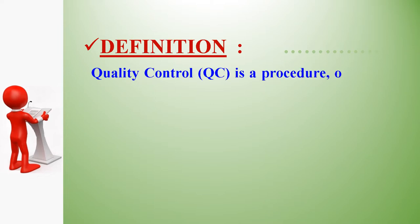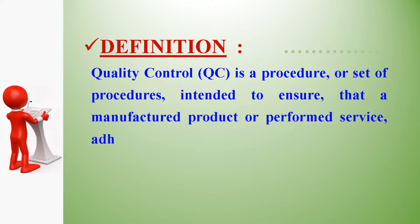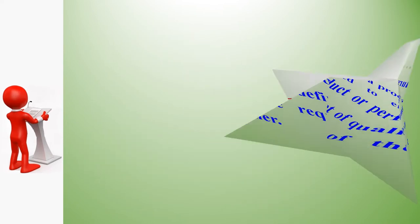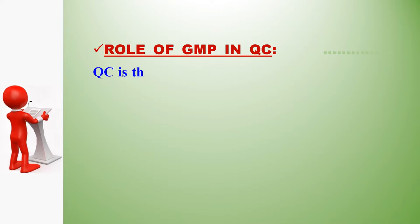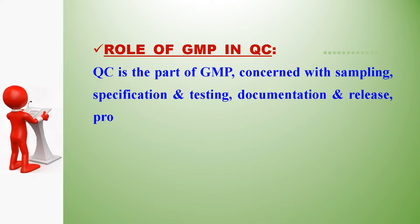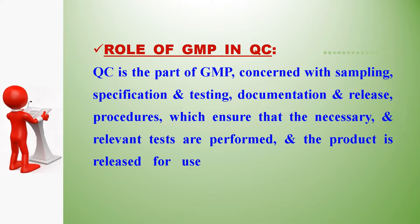Definition of Quality Control: QC is a procedure or set of procedures intended to ensure that a manufactured product or performed service adheres to a defined set of quality criteria, or meets the requirements of the client or customer. Role of GMP in QC: QC is the part of GMP concerned with sampling, specification, testing, documentation, and release procedures, which ensure that the necessary and relevant tests are performed and the product is released for use only after ascertaining its quality.